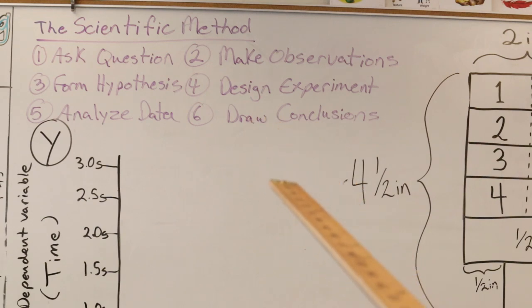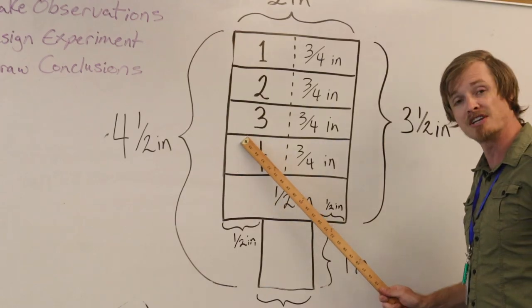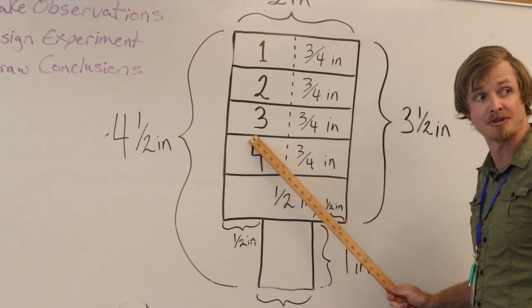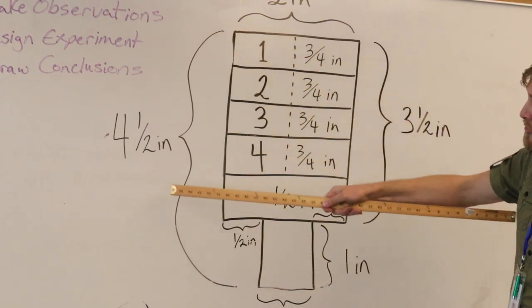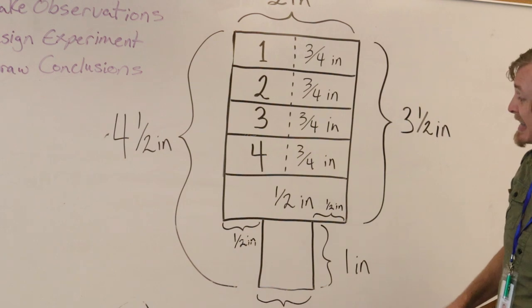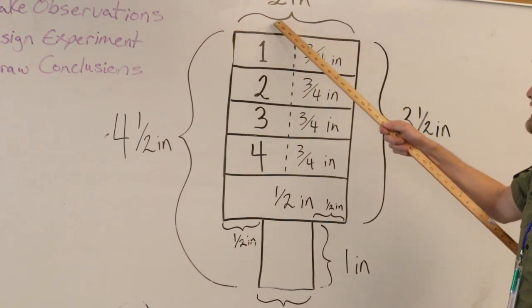Does the evidence and the data we collect support our hypothesis or our claim? Here, I have dimensions for our paper helicopter. I want the helicopter to be about four and a half inches in length, two inches in width.